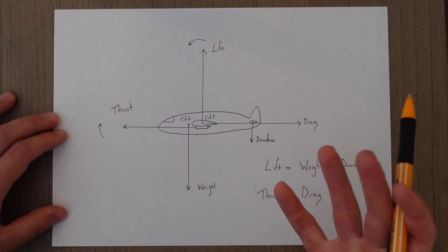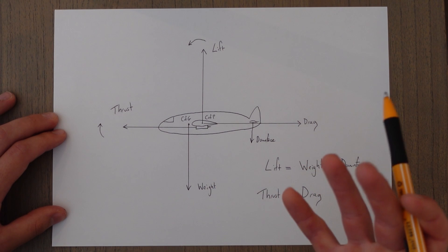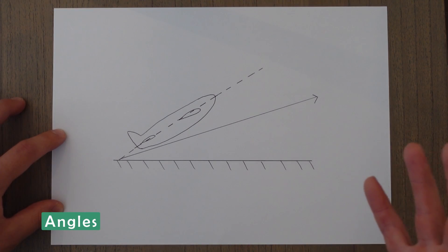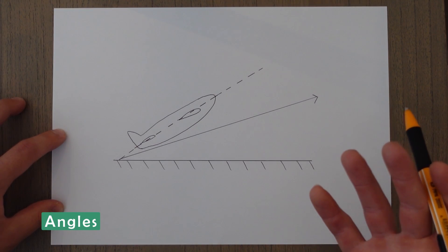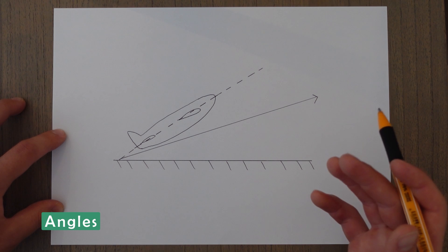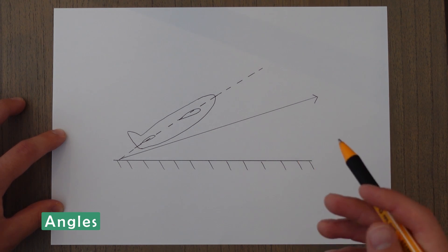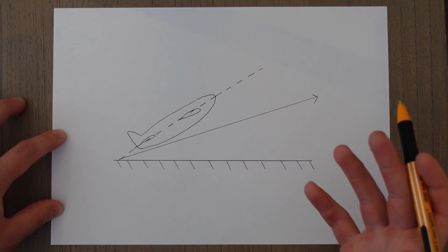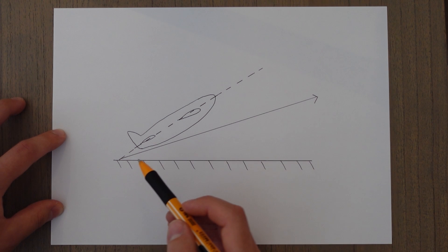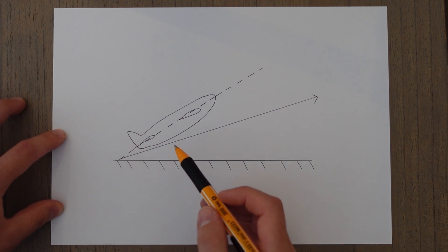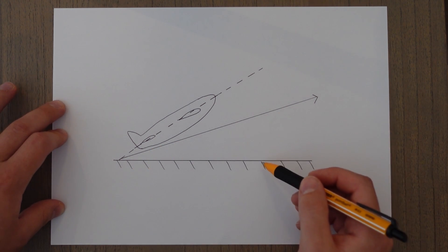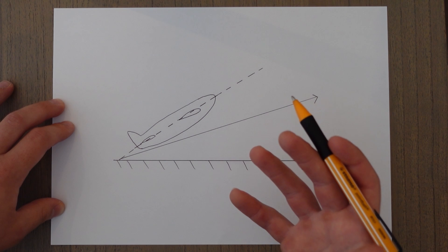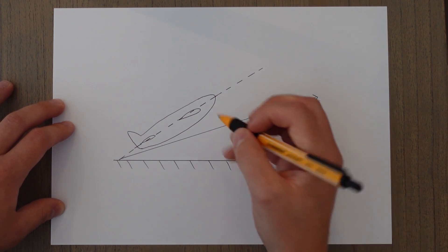Think of level flight as that neutral point and all other maneuvers are just edits of this. Before looking at the forces in a climb, there are a few definitions to get out of the way first — mainly pitch, flight path angle and angle of attack. The flight path angle is the angle between the horizontal line and the actual path that the aircraft is moving through the air.